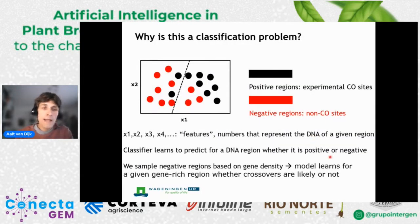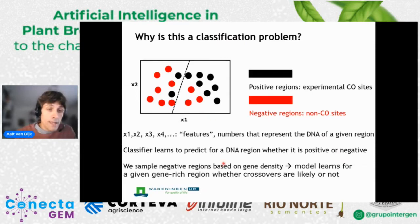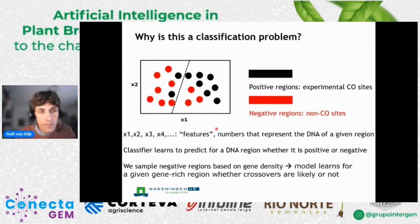I would like to consider how you can frame crossover prediction as a machine learning problem. In particular, we framed it as a so-called classification problem. Classification means we try to predict multiple different classes based on some properties of the data, and it is one of the main tasks in machine learning. I visualize in a very schematic way what classification is about: here we have red and black circles, and our task would be to predict whether a circle is black or red based on its position — based on features X1 and X2.